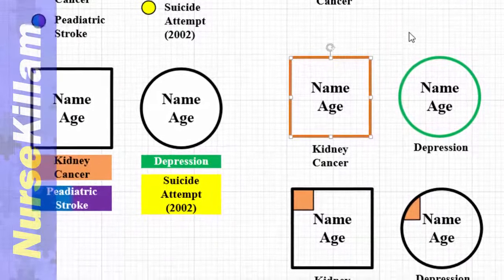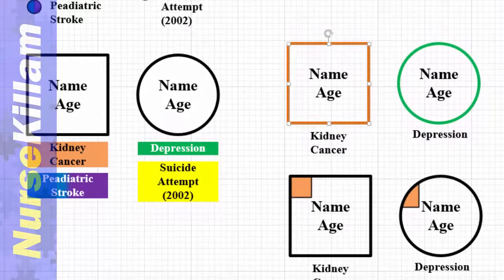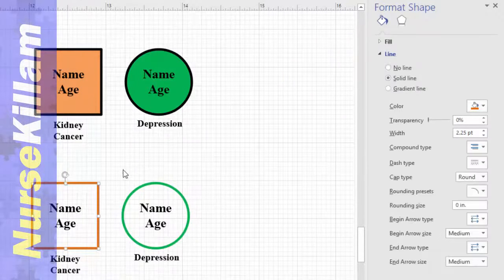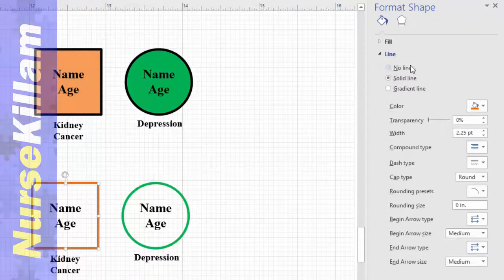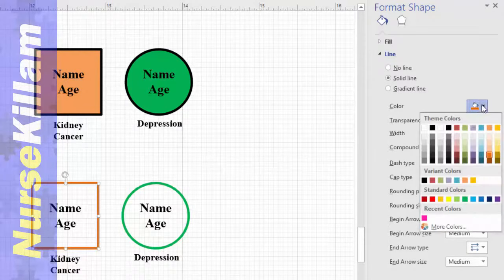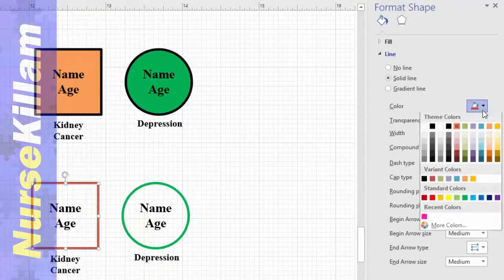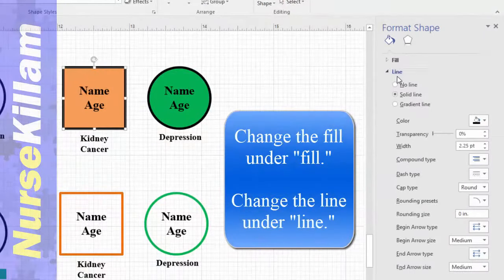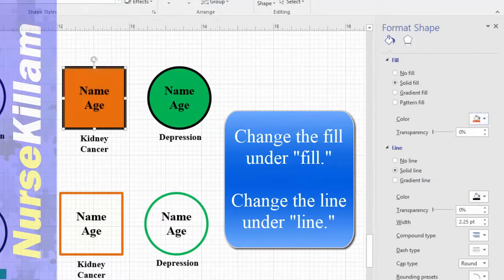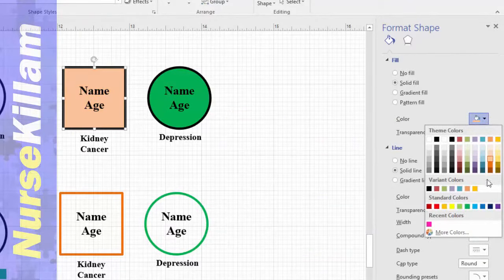Color coding can also be used and is recommended as it helps with easy identification and assessment. There are several ways to color code illnesses inside Visio. The outside or the inside of the shape can be colored. This approach can become tricky when individuals have several comorbidities. You can add color to a shape under the format shape menu you opened earlier on the right hand side or in the shape styles group under the Home tab.